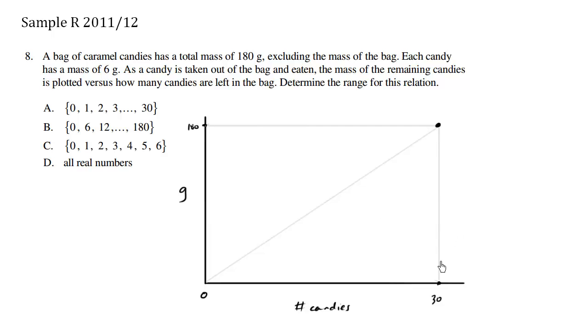However, as we take away candies, we're going to be losing 6 grams at a time. And the grammage will decrease until finally we have no candies, 0 candies, where the total grammage is going to be 0.